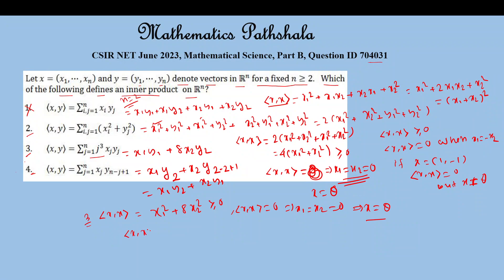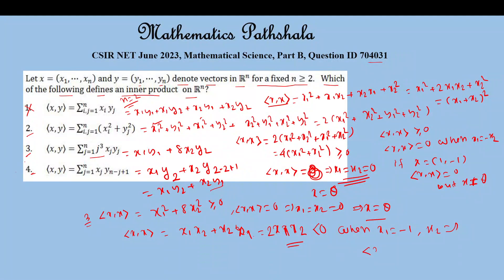For Option 4, the inner product of (x, x) equals x1·x2 + x2·x1 = 2x1x2. This can be negative — for example, if x1 = −1 and x2 = +1, the inner product of (x, x) = −2, which is less than 0. Positivity requires it to always be greater than or equal to 0, but here we get a negative value. So positivity is not satisfied for Option 4, therefore Option 4 is false.